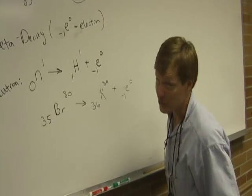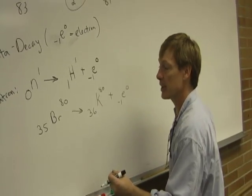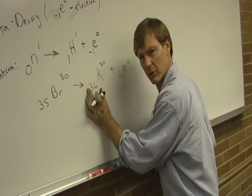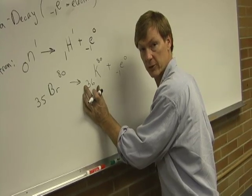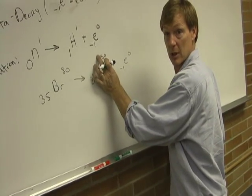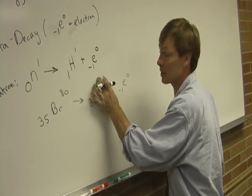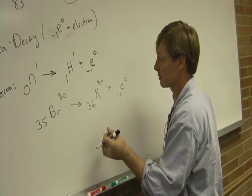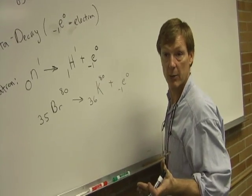So I gained a proton, but I lost a neutron. So I have one higher atomic number, but still the same 80, because I've got one less neutron, but one more proton. This is how beta decay works.